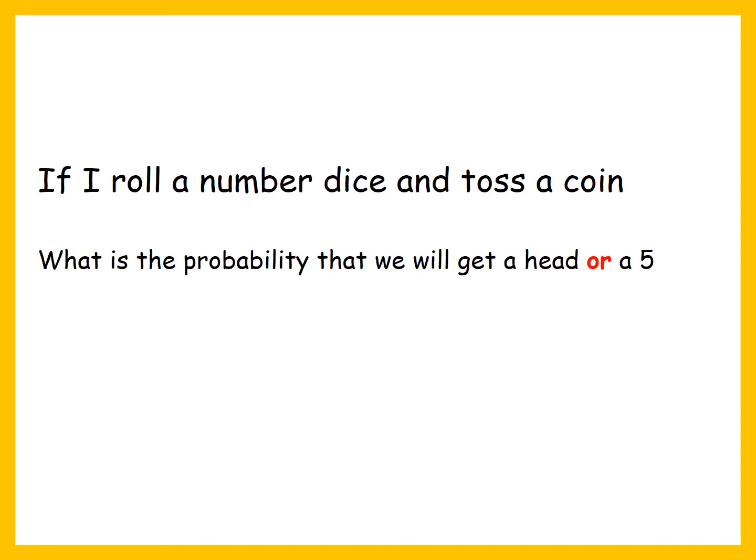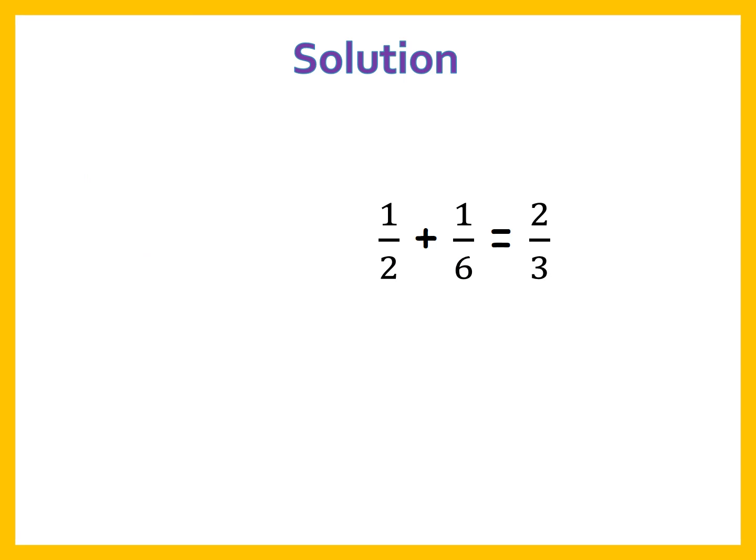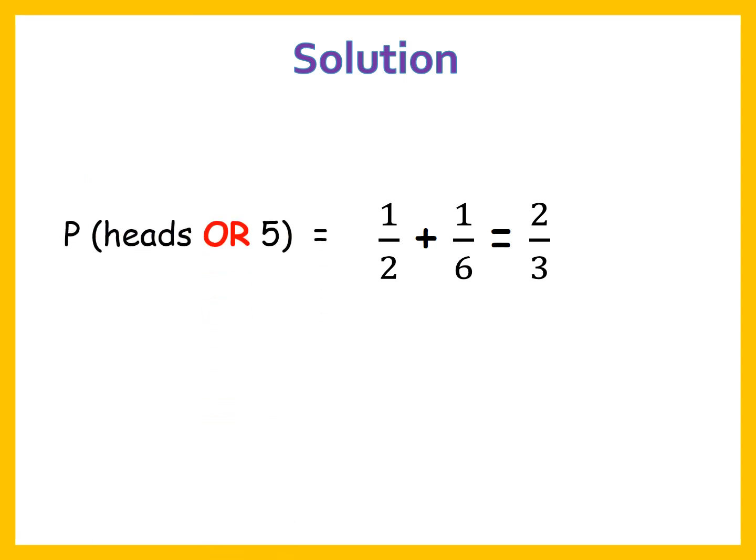Going back to the starting question — if I roll a dice and toss a coin, what is the probability of getting a head or 5? The probability of getting a head is 1 by 2. When we roll the dice, we can get numbers 1 to 6, so the probability of getting a 5 is 1 by 6. Using the addition rule, the total probability is 1/2 plus 1/6. Here we have used the rule of addition. Thank you.